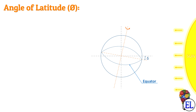Now let us start with the angle of latitude phi. Let us consider a point on the earth's surface, then project this point to the equatorial plane of the earth by drawing a parallel curve to the meridian. We then join the point of location to the center of the earth, and also connect the projected point on the equatorial plane to the center of the earth. The vertical angle so formed by these two lines is called the angle of latitude phi.